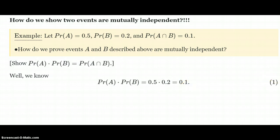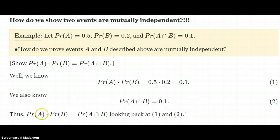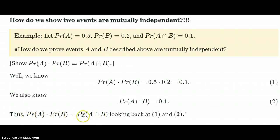Let's tag that as expression 1. We also know the probability of A intersect B, on the right-hand side, is 0.1 — let's call that expression 2. So expressions 1 and 2 are the same, both equal to 0.1. Since both sides are equal to each other, we know that the probability of A times the probability of B must equal the probability of the intersection between them — by the transitive property. So this holds true: the left side is 0.1 and the right side is 0.1.